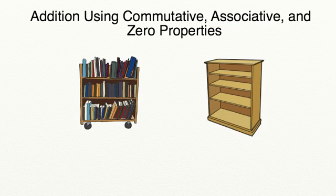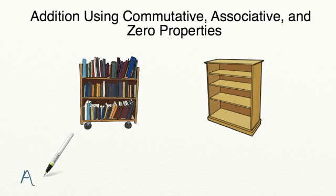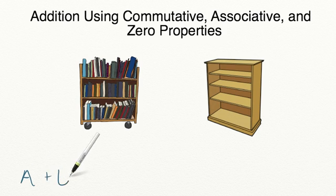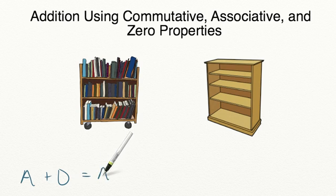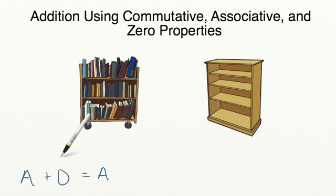Let's take a moment to discuss the property of zero in addition. Whenever you're adding a number to zero, the number is going to have the same value as it did before. Let's look at this using variables. Using the variable A — which can represent any number or set of numbers you're adding to zero — A plus 0 will have a sum of A. So if we add any value to the number zero, the value stays the same.